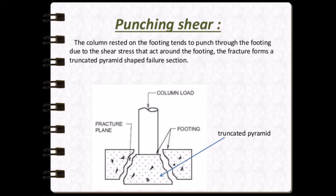The column resting on the footing tends to punch through the footing due to the shear stress that acts around the footing. The fracture forms a truncated pyramid-shaped failure section. Hence, to avoid such failure, a greater depth of foundation or footing has to be provided, which will be discussed in the numerical part.